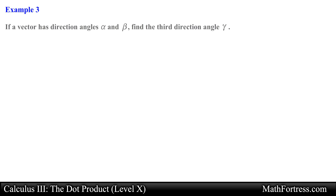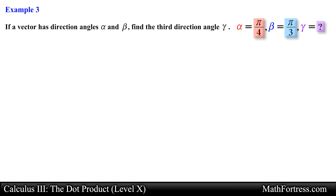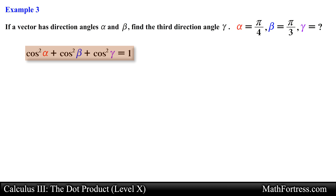Alright, let's go over the final example. If a vector has direction angles alpha and beta, find the third direction angle gamma. Here we are given two of the direction angles of a vector in space, and we are asked to find gamma, the direction angle that the vector makes with the unit vector k hat. We can easily find this value by using the relationship cos squared alpha plus cos squared beta plus cos squared gamma is equal to 1. Let's go ahead and substitute these angles into the expression.